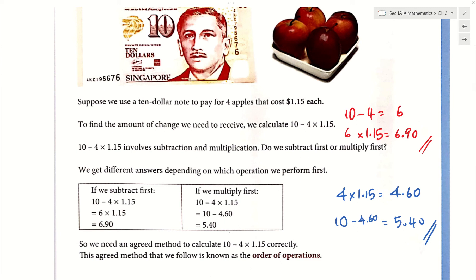Because we expect to find the total amount of money that the 4 apples cost, then you pay the $10, you get change. So we are supposed to do the multiply first, then you do the subtraction.